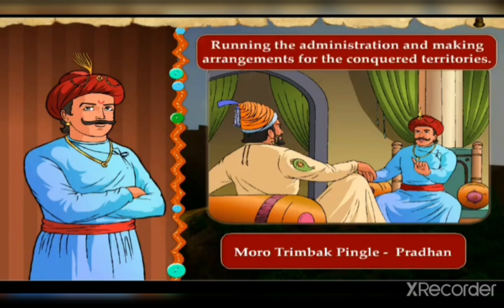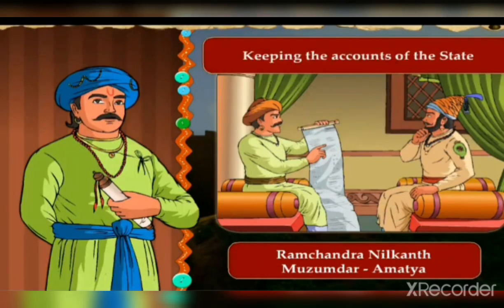Let us see the Ashtapradhan Mandal of Shivaji Maharaj. First: Moro Trimbak Pingla, designation Pradhan — his work was running the administration and making arrangements for conquered territories. Next: Ramchandra Neelkand Majumdar, designation Amatya — work: keeping the accounts of the state.